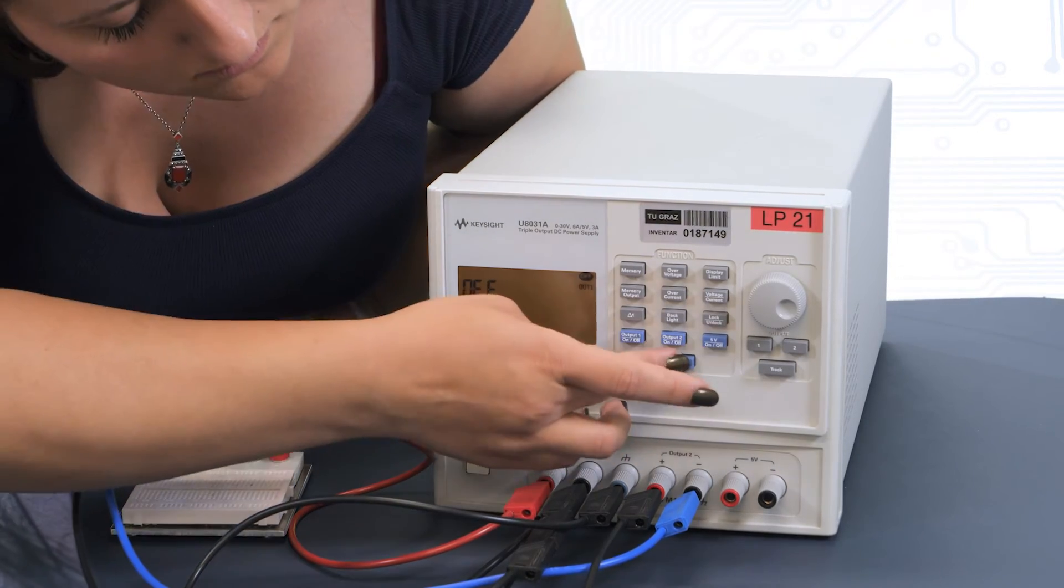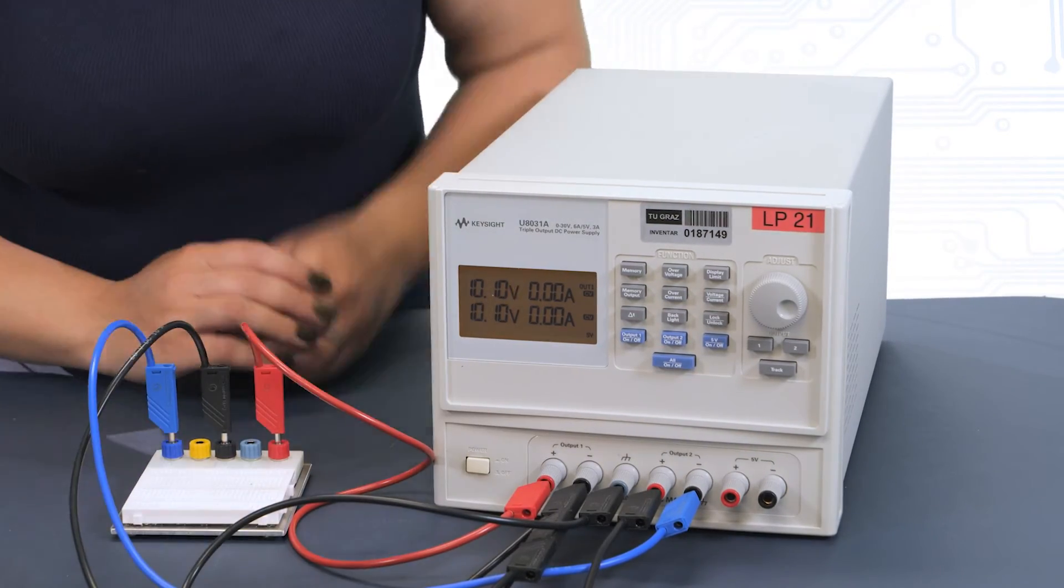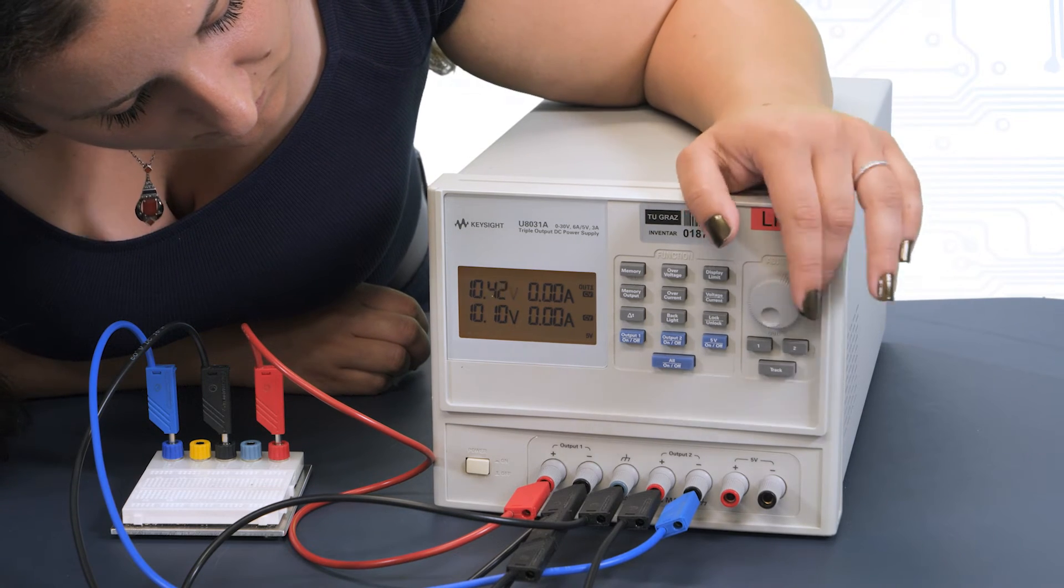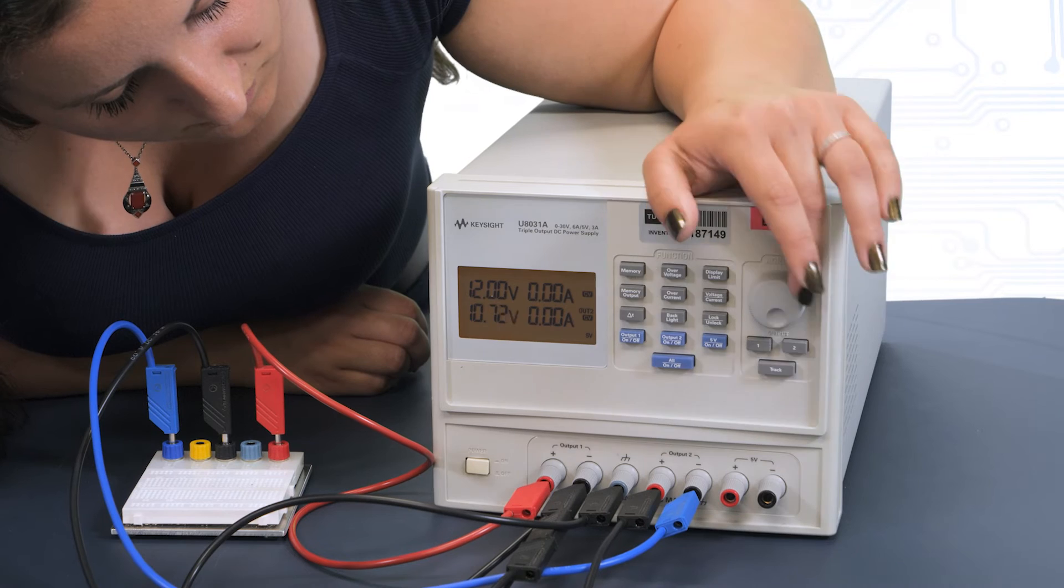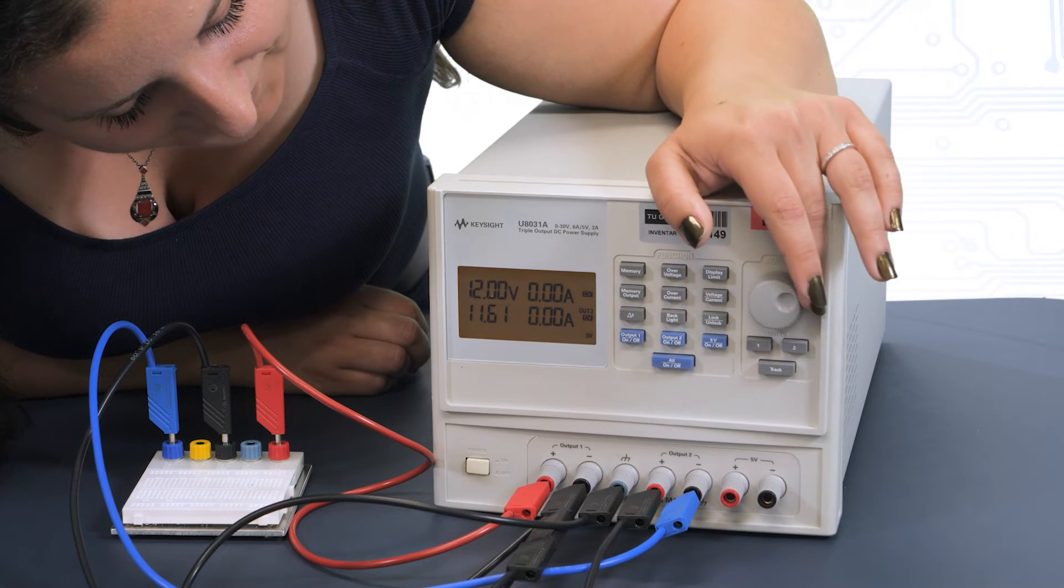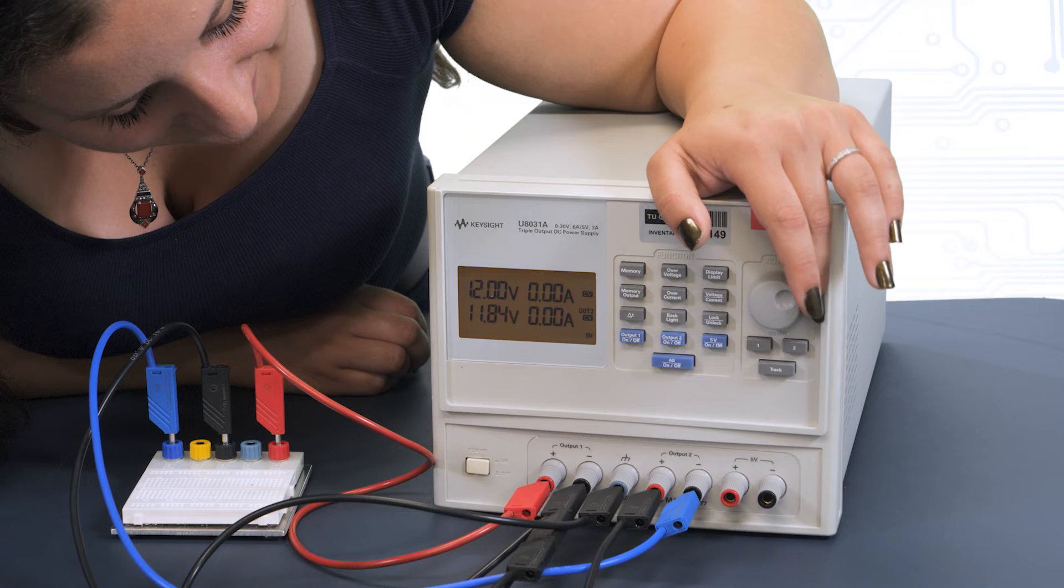Finally, we only have to set both outputs to 12 volts. This can either be done individually, or we can set the voltage on one of the outputs and then use the track function of our power supply.